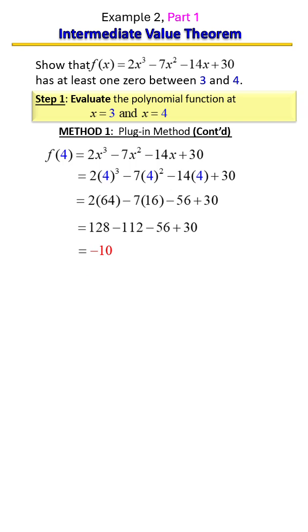They're not opposite in signs. So that means that the intermediate value theorem does not prove that this function has a zero between three and four.